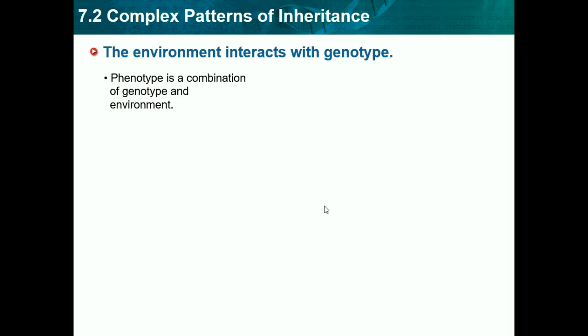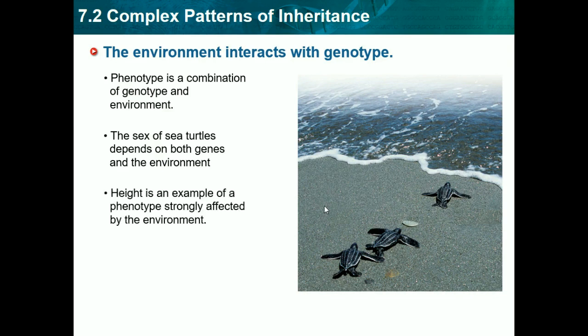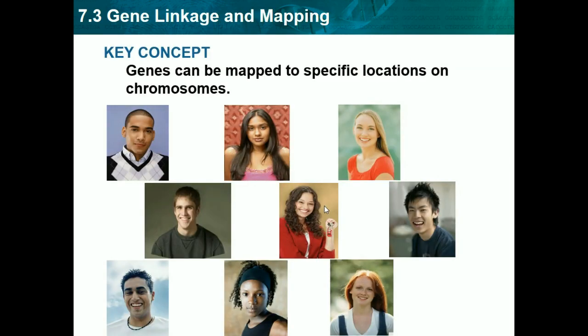The environment also interacts with genotype. Phenotype is a combination of genotype and environment — genotype is the genes we get from our parents, and phenotype is how we look. For example, the sex of a sea turtle depends on both genes and the environment, likely related to egg temperature. Height is another phenotype strongly affected by environment — where you live affects your height. It's not just genes that affect how we turn out; the environment plays a big role too.